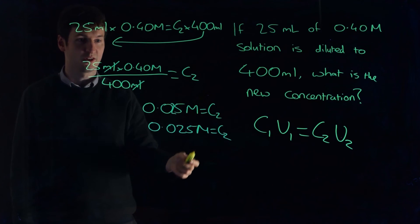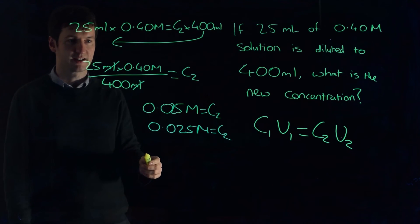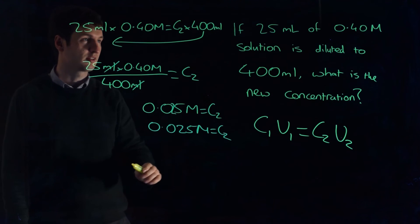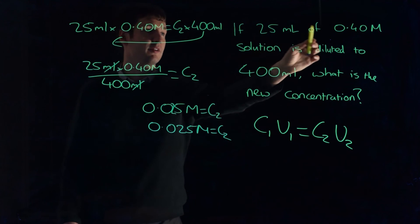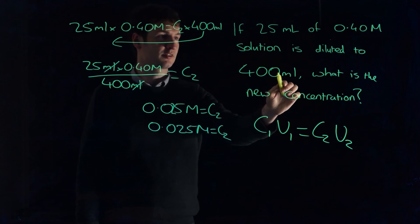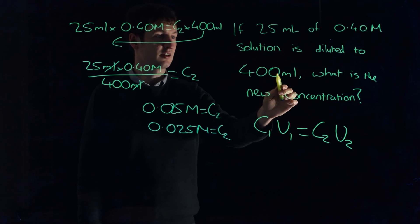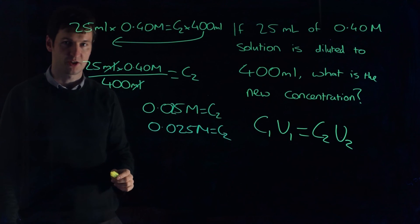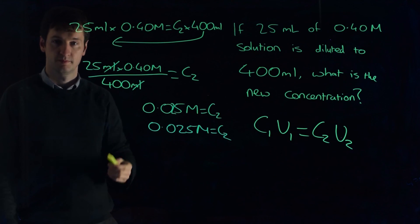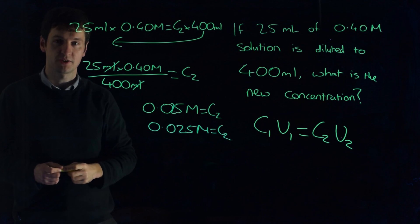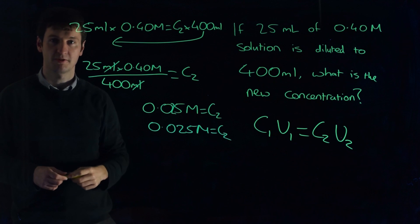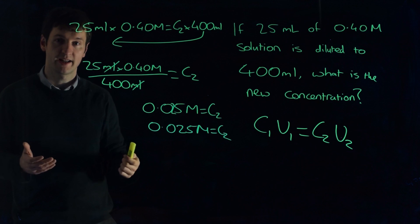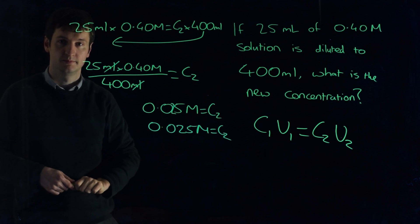Of course, you can avoid doing all the mental arithmetic by just putting it into your calculator, but this is how the calculation works. So we know that if 25 milliliters is diluted to 400 milliliters, it's 16 times the volume, so it's one sixteenth the concentration. Hope that helps. If you have any questions, post them on the forum, post them below in the comments, or ask them in the lab. That's all for now.